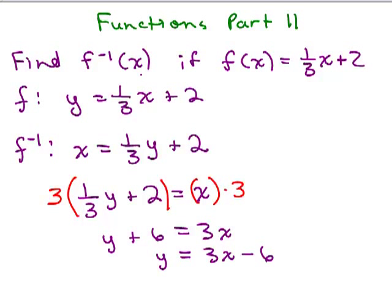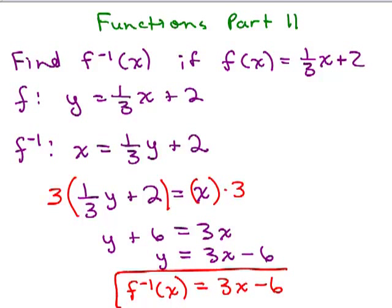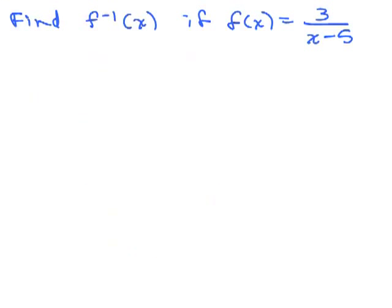Since it says find f inverse of x, the last step is to rewrite in function notation: f inverse of x equals 3x minus 6. Both f of x and f inverse of x are lines. To graph them, you can graph one and then switch the ordered pairs to get the other line.